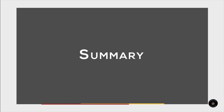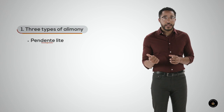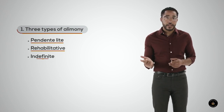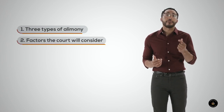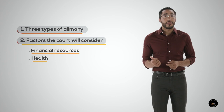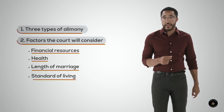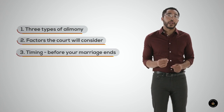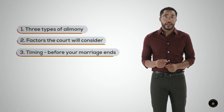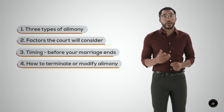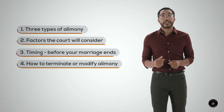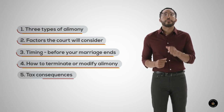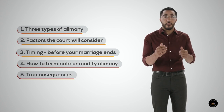Let's summarize. Remember, there are three types of alimony: pendente lite, rehabilitative, and indefinite. The court will consider several factors when contemplating alimony in a divorce case, including financial resources, health, length of marriage, and standard of living. If you want to ask the court to award alimony, you must ask before the marriage is ended. Alimony may end if one spouse dies, remarries, or the court issues an order. You may modify alimony if there is a material change in circumstances. Finally, be sure to understand the tax consequences of alimony payments.